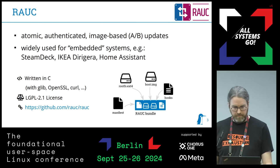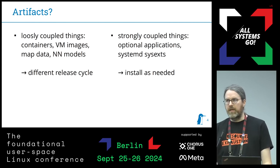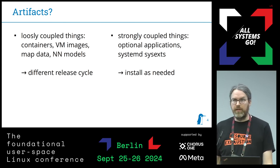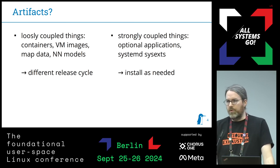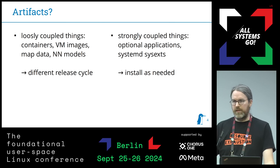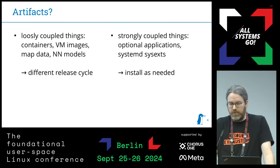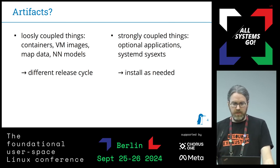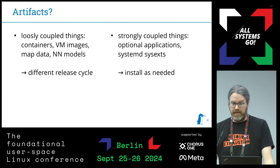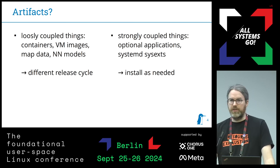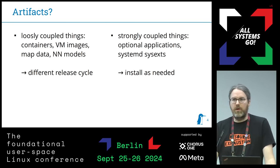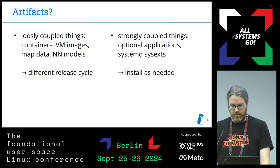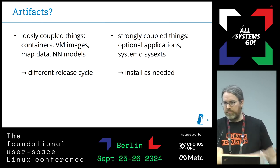Currently we use it basically for root filesystems, but people also want to deploy other stuff onto their systems like containers, VM images, map data if you build a navigation system, or neural network models which are not closely coupled to the root filesystem. They could use a different C library or don't link at all to the running system. They usually have different release cycles — you want to deploy them in the field without replacing the root filesystem. There are also things more closely coupled, like systemd sysexts or optional applications, not installed on all systems but only some, or installed later as needed. That's what we call artifacts, different from the base images.